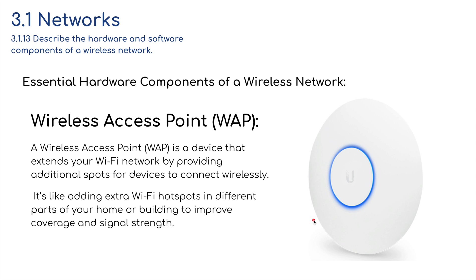We've also got a wireless access point, or WAP. A wireless access point is a device that extends your Wi-Fi network by providing additional spots for devices to connect wirelessly. It's like adding extra Wi-Fi spots in different parts of your home or building to improve coverage and signal strength.